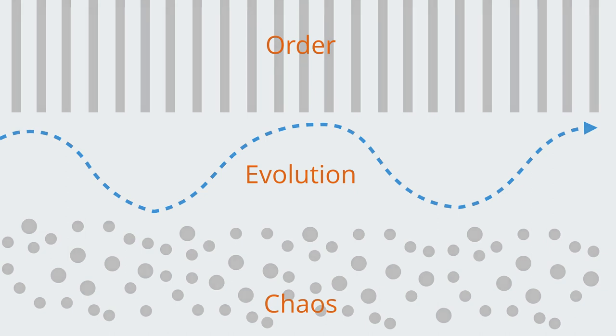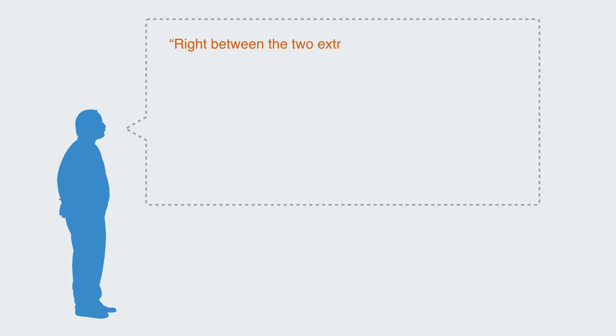The author Michael Waldrop in his book Complexity: The Emerging Science at the Edge of Order and Chaos describes the term as such: right between the two extremes at a kind of abstract phase transition called the edge of chaos.